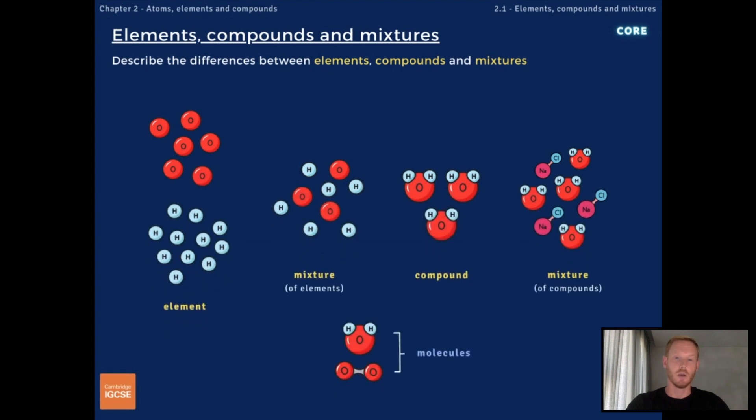Okay, a quick summary. So, elements are substances that cannot be divided into simpler substances by chemical reactions, compounds and molecules formed when two or more different elements chemically combine, and mixtures contain two or more elements or compounds that are not chemically bonded together.